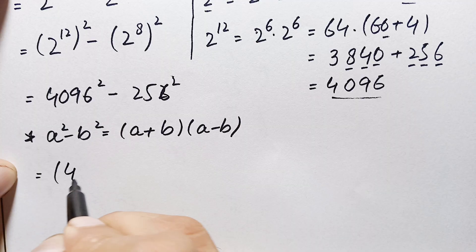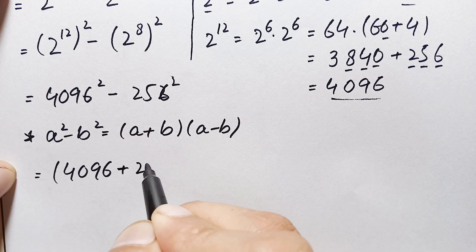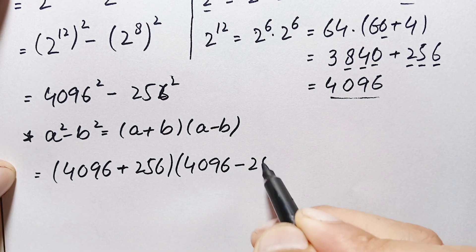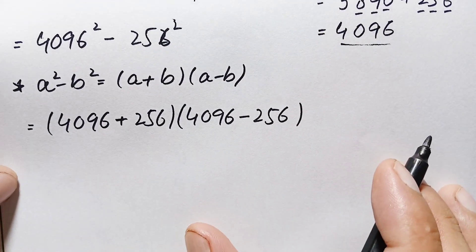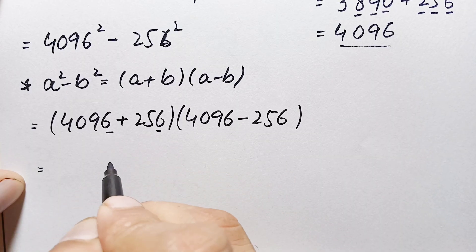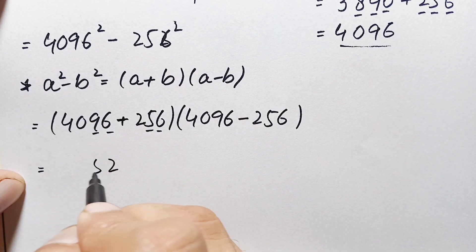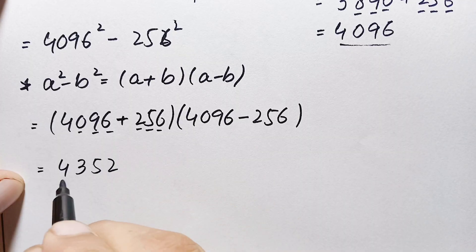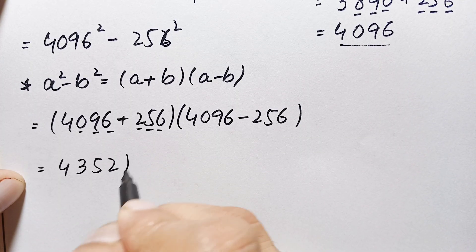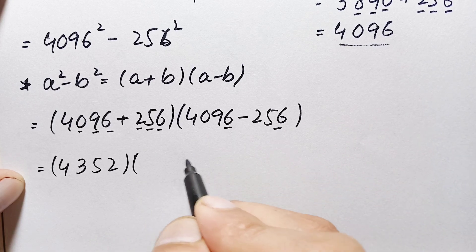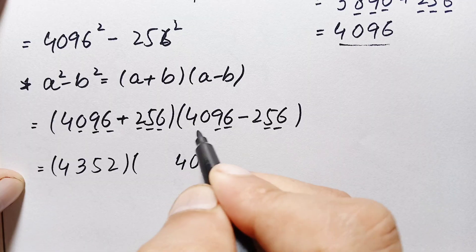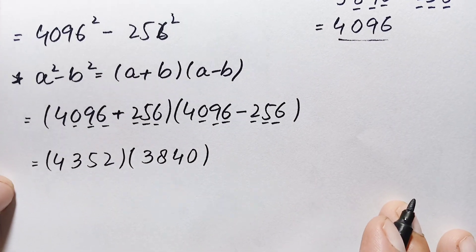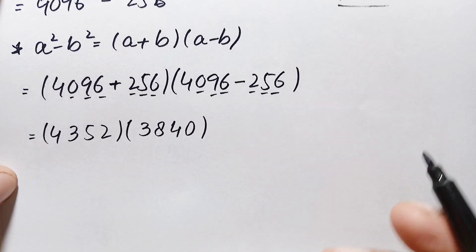Applying the identity, this becomes 4096 plus 256 times 4096 minus 256. Now let's add and subtract these two numbers. For addition: 6 plus 6 is 12, carry 2; 9 plus 5 is 14 plus 1 is 15, carry 1; 0 plus 2 plus 1 is 3; and 4. So the sum is 4352. For subtraction: 6 minus 6 is 0; 9 minus 5 is 4; 40 minus 2 is 38. So the difference is 3840. We now need to multiply 4352 times 3840 without a calculator.